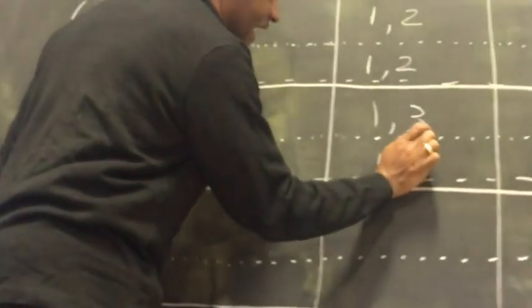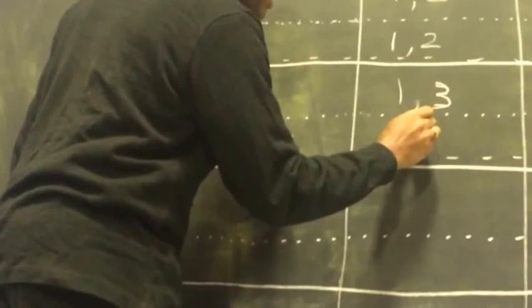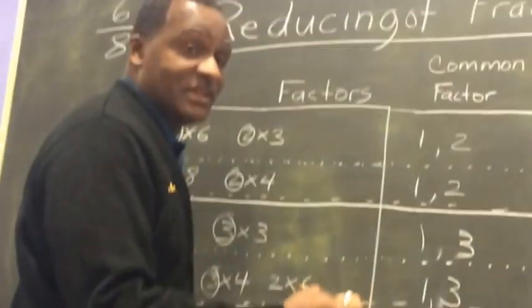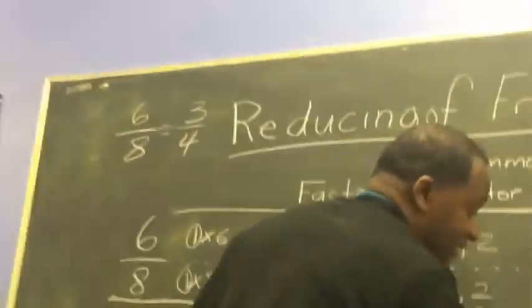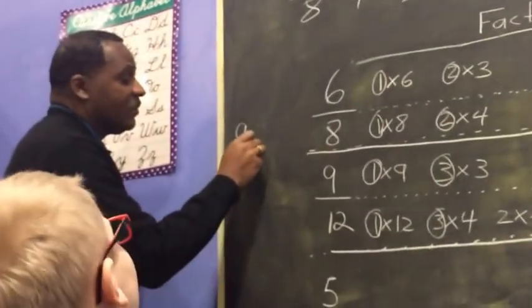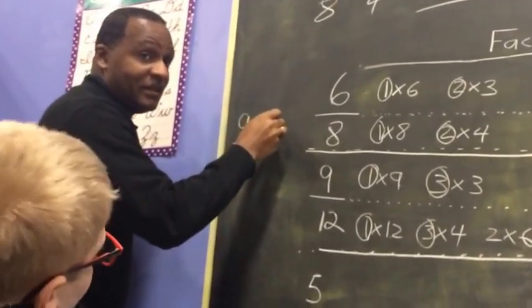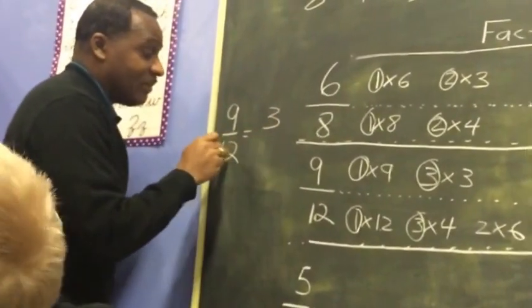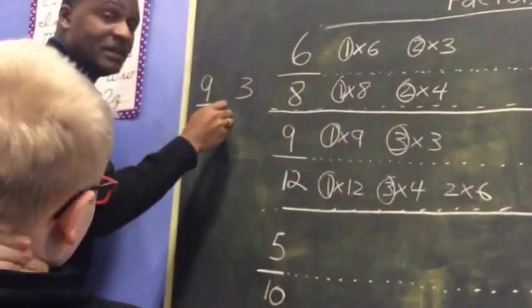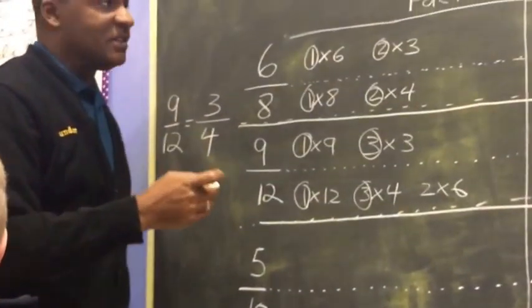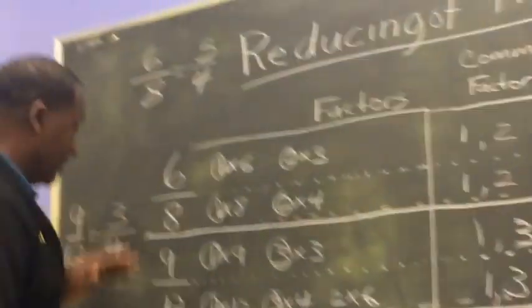The two common factors are 1 and 3. The greatest common factor is 3. So let's look at 9 twelfths — how many 3s are in 9? Three. And how many 3s are in 12? Four. So our 9 over 12 equals 3 over 4. We need the greatest common factor to be able to reduce the fraction.